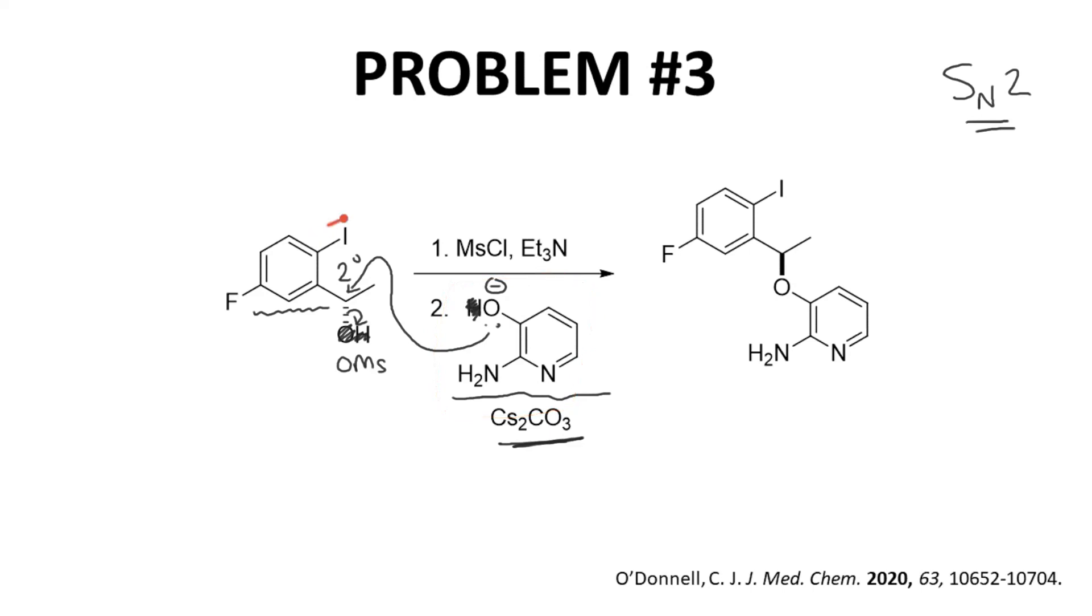We do have an iodine. Why isn't the iodine a leaving group? We will normally only consider a group to be a leaving group for the SN2, SN1, E2, or E1 if the leaving group is attached to an sp3 carbon. The iodine is on an sp2 hybridized carbon, so it's not a suitable leaving group for these reactions.